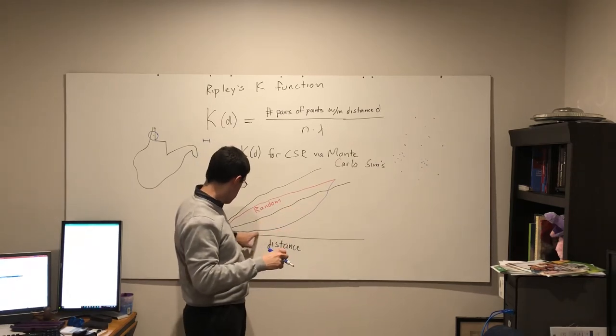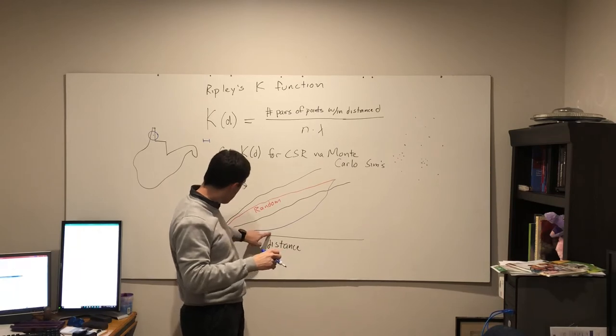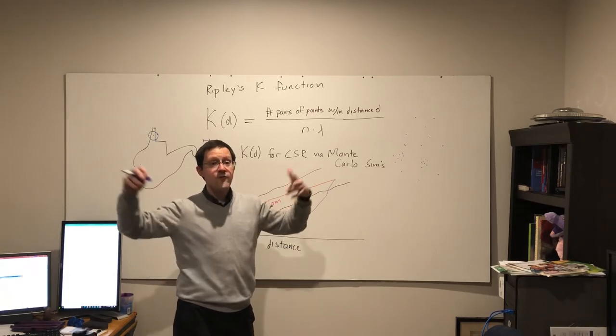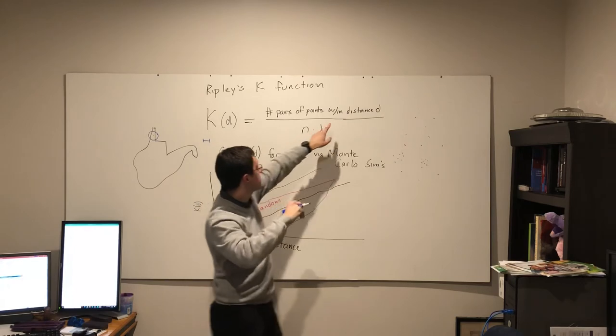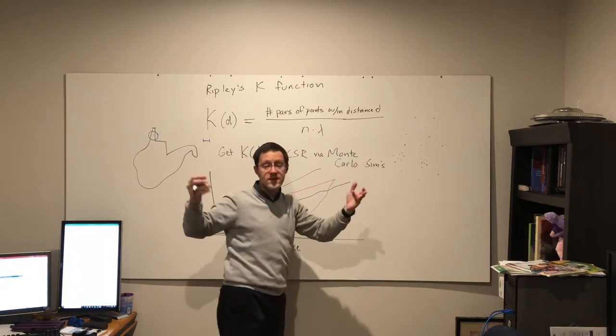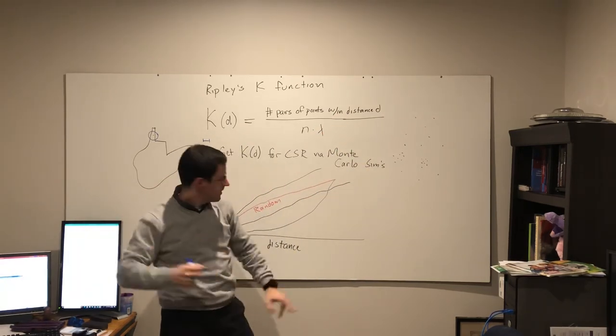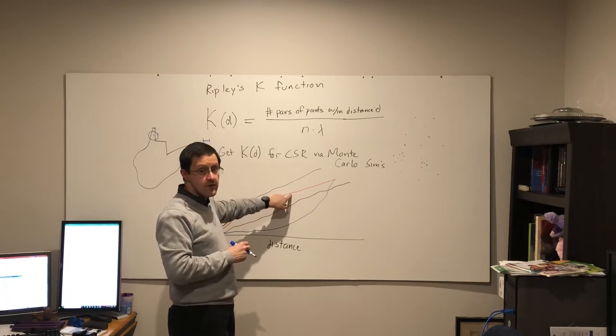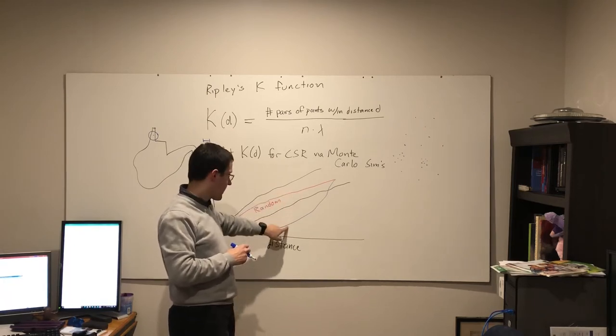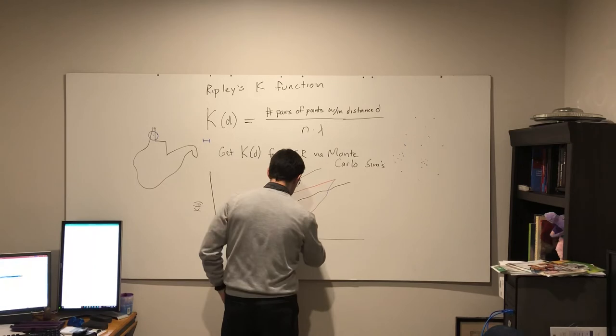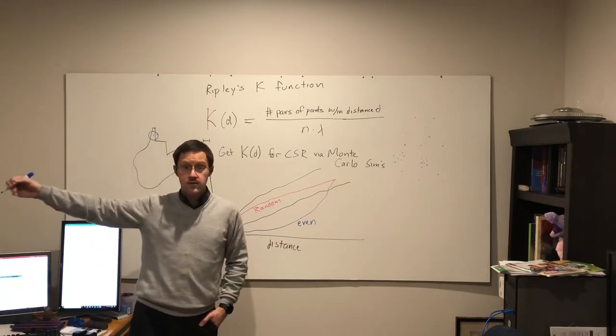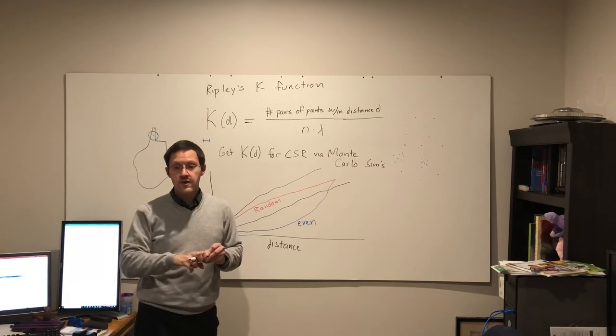But what happens in the middle can be important. And here we essentially have too few points within that distance apart. They're all further than that distance apart because it says within the distance d, not just at that precise distance. So here I expect a larger number of points that are that close to each other than is actually the case.